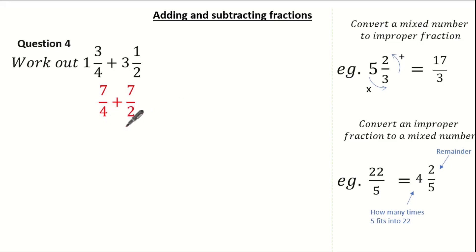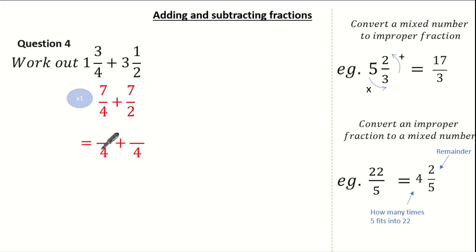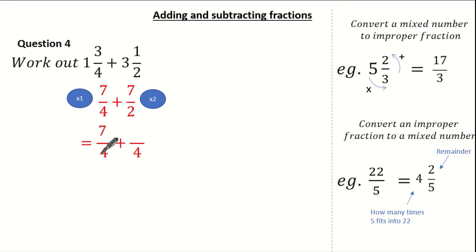Now let's have a look at our denominators. The lowest common multiple of 4 and 2 is 4. What do I multiply the denominator of 4 by to give 4? It's 1. What do I multiply the denominator of 2 by to give 4? It's 2. So: 7 times 1 is 7, 4 times 1 is 4, 7 times 2 is 14, and 2 times 2 is 4. Now we simply add to give me 21 over 4.